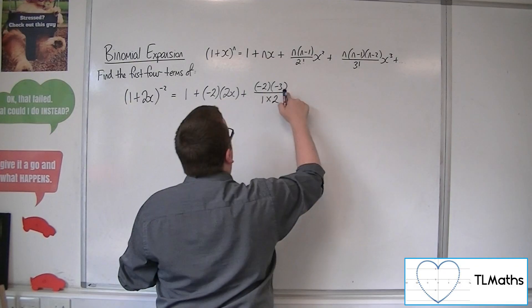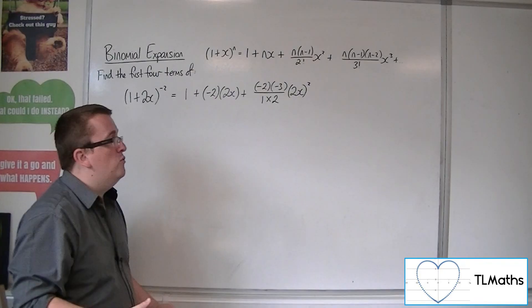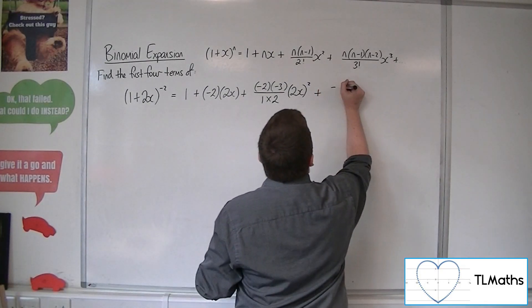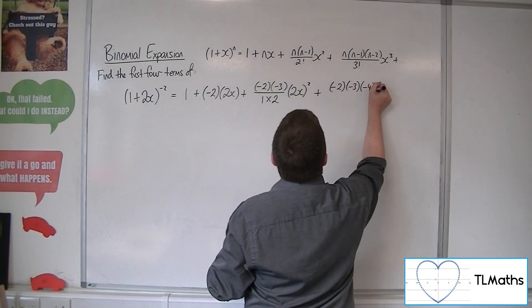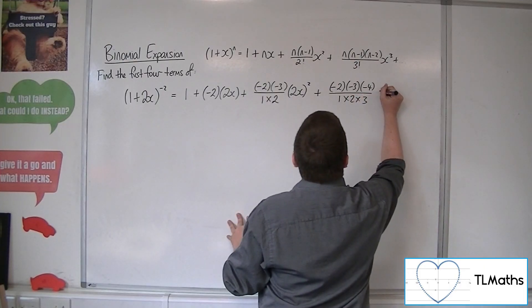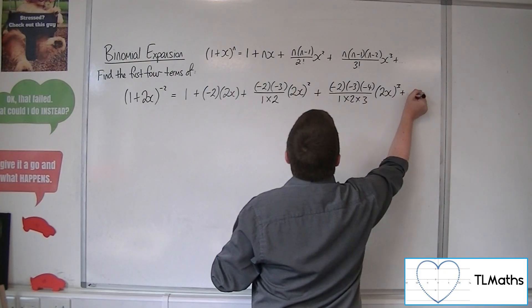And the x has been replaced with 2x, remember. So because you're squaring it, you need to put it all in a bracket. You need to make sure you're squaring the 2 as well. 1 plus minus 2, times minus 3, times minus 4, over 1 times 2 times 3. x cubed, so 2x cubed in a bracket.